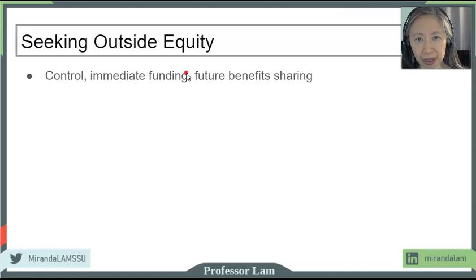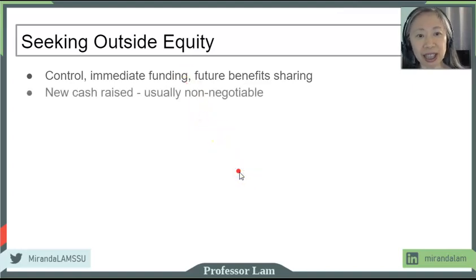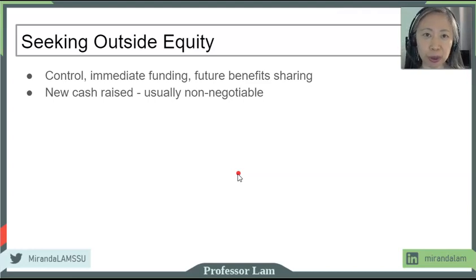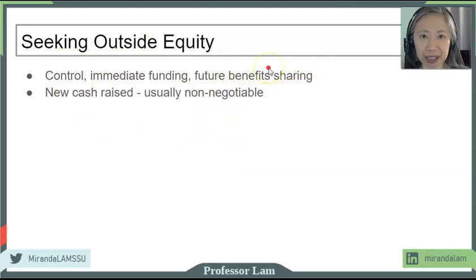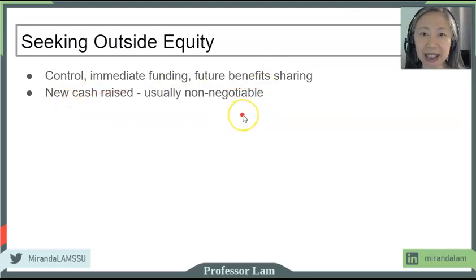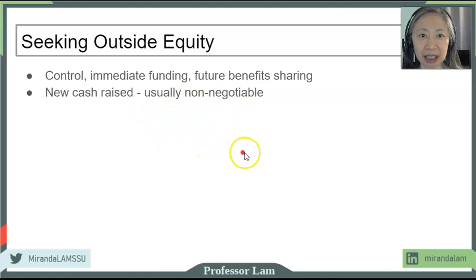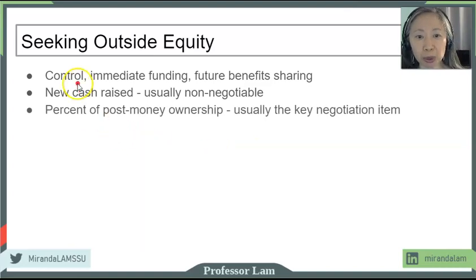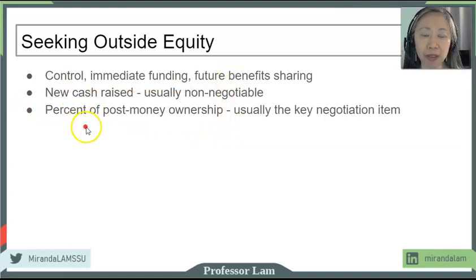There are a few common characteristics that are useful to keep in mind. First is that the amount of money that the entrepreneur needs is typically non-negotiable. An entrepreneur will most likely want to retain as much control as possible and to keep as much future benefits as they can unless they absolutely need the money to expand. So the amount of money they need is typically non-negotiable. What is negotiable is how much control and how much future benefits they need to give up. This is translated into the percentage of the company they're giving up — the percentage of the post-money ownership.